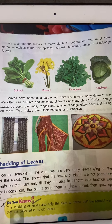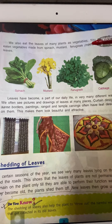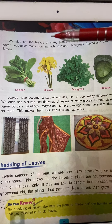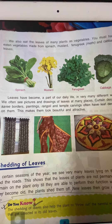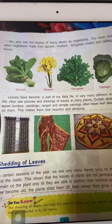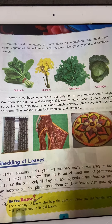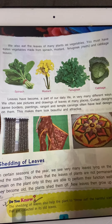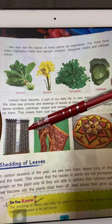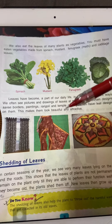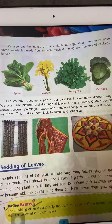Bahut saare aise leaves hain jaise ko hum log vegetable ke taur pe khaate hain, jaise methi — in English it is called fenugreek — mustard, spinach matlab palak. Is tarah bahut saare leafy vegetables hum log khaate hain. Leaves ko hum log aur bhi bahut jagah deikh sakte hain, jaise drawings mein — generally curtains mein, parde ke drawings mein leaves draw kiya hua hota hai. Saadim vagera mein print hota hai, rangoli mein print hota hai — yeh sab attractive banane ke liye hota hai.